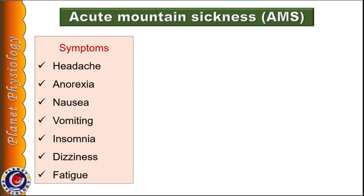Headache is bitemporal and of throbbing type, getting worst during nights and on awakening. Other symptoms include anorexia, nausea, vomiting, insomnia, dizziness, and fatigue. As these symptoms are non-specific, acute mountain sickness is commonly confused with viral flu, hangover, exhaustion, or side effects of certain medication. They can be easily distinguished by the response to oxygen therapy or by bringing the person to a lower altitude.